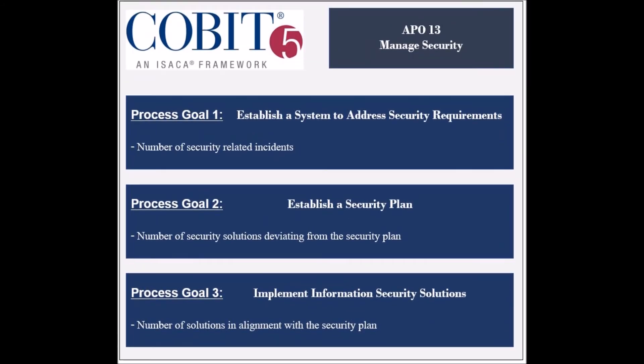The first process goal is to establish a system that effectively addresses the information security requirements, and its achievement is measured by the number of security-related incidents. The second goal is to establish a security plan, and its achievement is measured by the number of security solutions deviating from the plan.